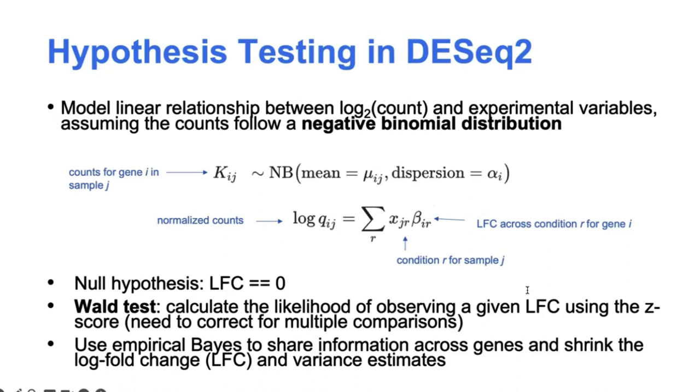And then as we discussed last week, the correction for multiple comparisons is crucial here. So DESeq2 will use the Benjamini-Hochberg method for controlling the false discovery rate.